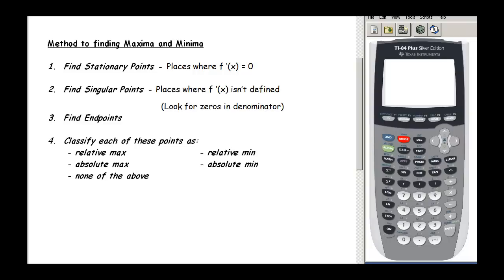Welcome back. In this video we are going to be finding the maximum and minimum values of a function using a four-step process. First, we find all stationary points. Then we find singular points. If there are any endpoints given to us, we use those. Then we create a table and classify all of the points as either maximum, minimum, what type, or sometimes none of the above.